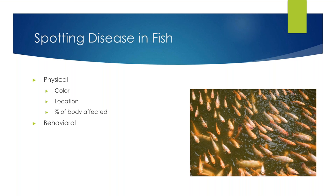Behavioral signs of disease can include body position — how a fish holds itself in the water column — which also relates to buoyancy. Swimming behavior is another indicator: whether a fish is doing its normal swimming or sitting at the bottom, very lethargic. And appetite: fish are mostly very good eaters, so a fish that doesn't have a good appetite indicates that something behaviorally is wrong and potentially a disease is in process.